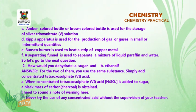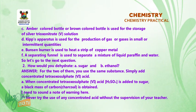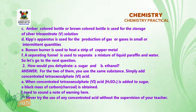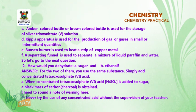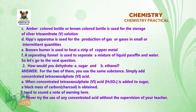For C, an amber-colored or brown-colored bottle is used for the storage of silver trioxonitrate(V) solution. For D, Kipp's apparatus is used for the production of gas in small or intermittent quantities. For E, a Bunsen burner is used to heat a strip of copper metal. And for F, a separating funnel is used to separate a mixture of liquid paraffin and water.